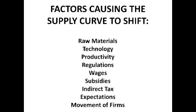Now, subsidies and indirect taxes — they are opposites of each other. A subsidy is money given to a firm by a government or organisation to cut its costs, whilst indirect taxes are taxes placed on goods or services which increase the cost of production for firms. A rise in subsidies causes a right shift of the supply curve; a fall in subsidies causes a left shift. A rise in indirect taxes causes a left shift because firms pay more and production is more expensive. A fall in indirect taxes causes a right shift because costs of production fall, so firms produce and supply more.